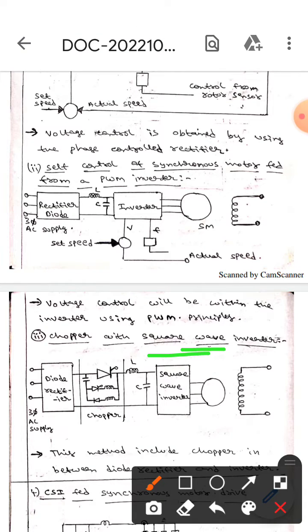The next one is chopper with square wave inverter. This method includes a chopper. If you observe here, this is the chopper.